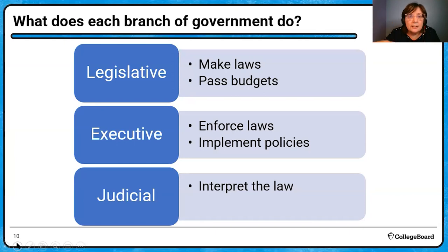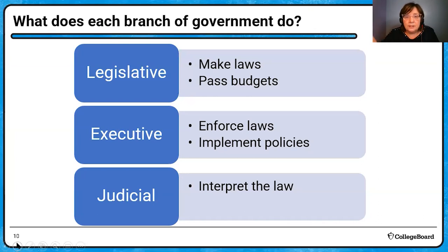Legislatures make laws and pass budgets. How does that happen across all six countries? What's the difference between an independent legislature and one in the most authoritarian countries, where legislatures are also technically making laws? What makes a democratic, independent legislature different? These are questions you need to be able to answer.